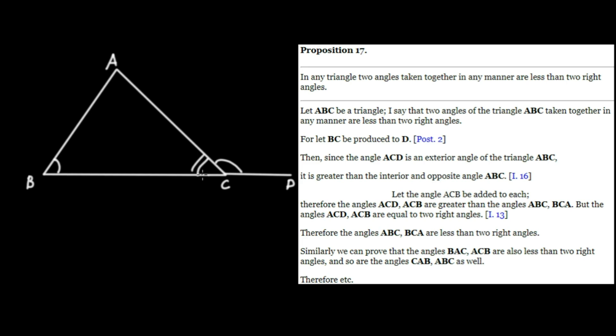Therefore, these two angles inside the triangle are guaranteed to not exceed two right angles. And we simply repeat this argument for the remaining two sides. And that's all for this proposition.